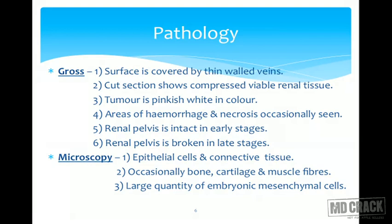Now the pathological perspective of this tumor — gross and microscopic. Grossly, the tumor surface will be covered by thin-walled veins. Cut section will show compressed viable renal parenchymal tissue. The tumor is pink in color, sometimes white or pink-to-white in combination. There will be areas of hemorrhage and necrosis. The renal pelvis is intact in earlier stages, but as the tumor increases in size the entire pelvic collecting system is destroyed. Microscopically, one can find epithelial cells and connective tissue, occasionally fragments of bone, cartilage, and muscle fibers. Large quantities of embryonic mesenchymal cells are identified on microscopic examination.